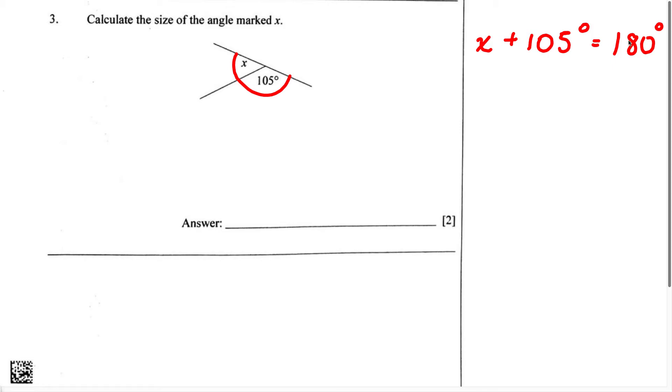Therefore we can write this as X equals, we have 180 degrees. And because it is a plus, when we move it over to the next side, it's going to become a minus. So we have minus 105 degrees.